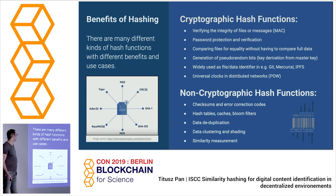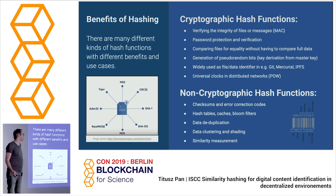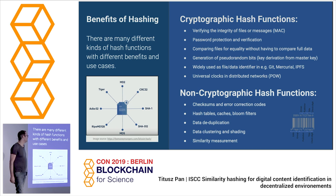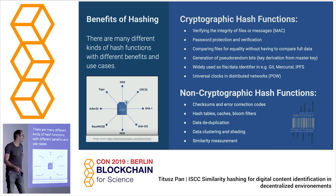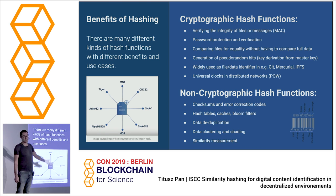The benefits of hashing are many: verifying integrity of files, password protection, comparing files for equality, generation of pseudo-random bits. It's widely used in file and data identifiers — Git version control, Mercurial, IPFS — and it's also used as a universal clock because proof of work is based on hashing.